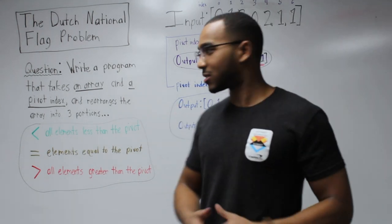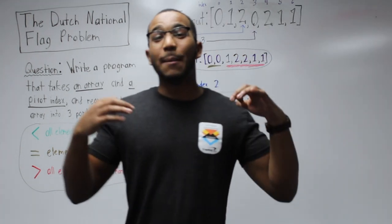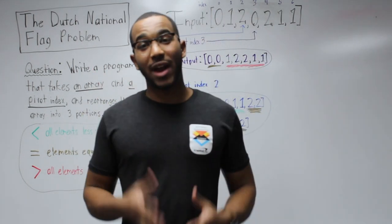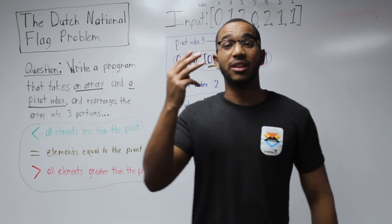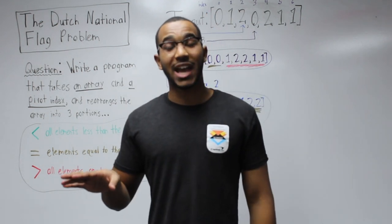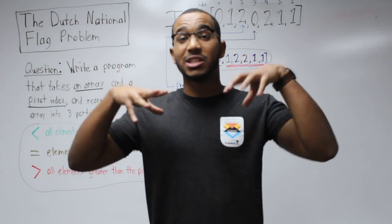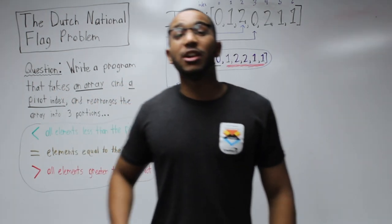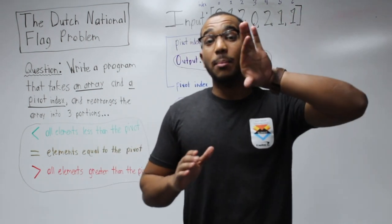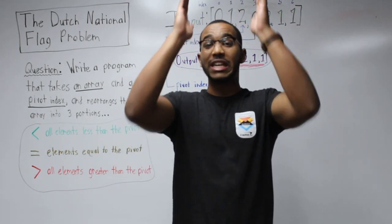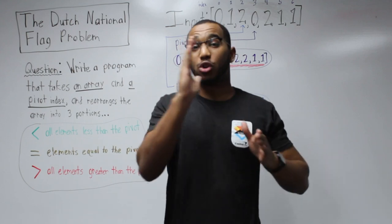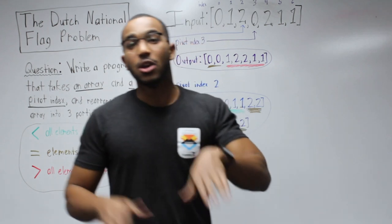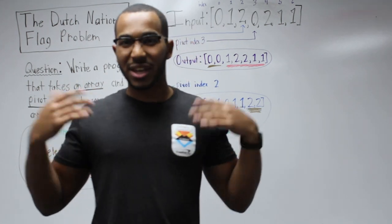So what is the Dutch National Flag problem asking us? Given an array and a pivot index in that array, rearrange the elements of the array so that they fall into three categories. Cut the array into: elements all before the pivot, elements all equal to the pivot, and elements all greater than the pivot — not the pivot index, but the value sitting at the pivot index.